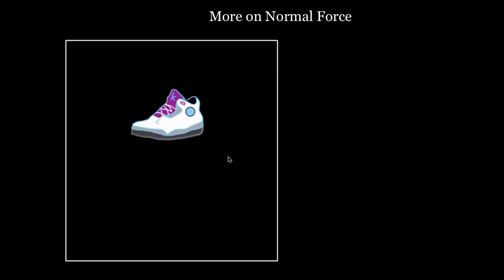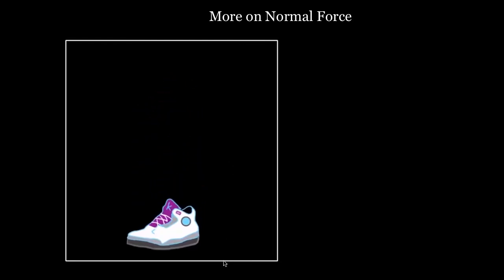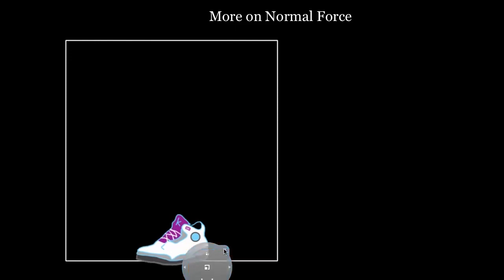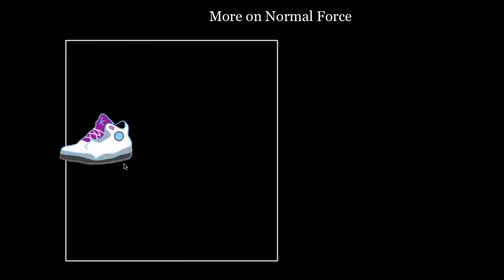One misconception is that people forget normal force is a contact force. You only have a normal force when two surfaces are in contact. So when the shoe's in contact with the floor, there'll be a normal force on the shoe and a normal force on the floor. Or if the shoe were in contact with the wall, there'd be a normal force on the wall and a normal force on the shoe.